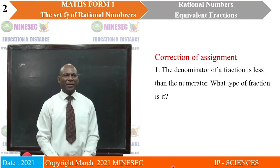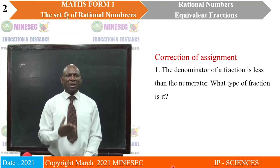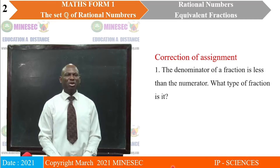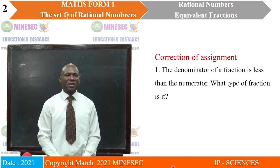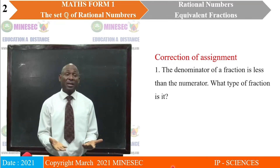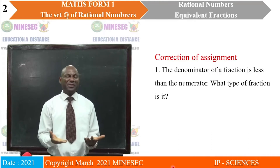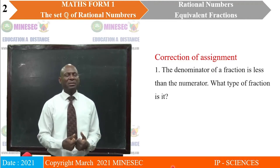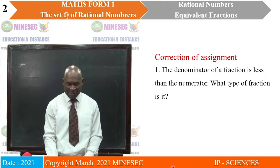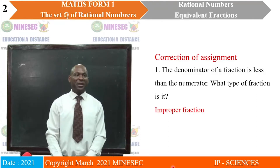Question number one: the denominator of a fraction is less than the numerator — what type of fraction is it? The denominator is less than the numerator, which means the numerator is more than the denominator, and this tells us that the fraction is an improper fraction by definition.